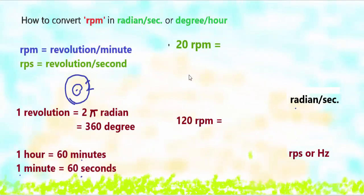Hello friends, here we are going to discuss how to convert RPM in radian per second or degree per hour. RPM means revolution per minute. RPS means revolution per second.